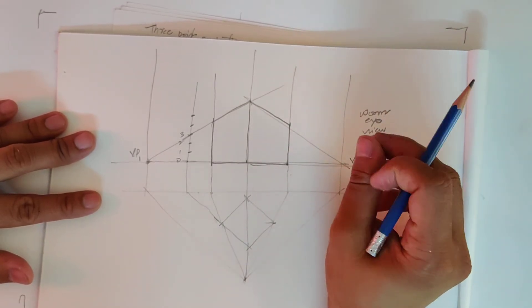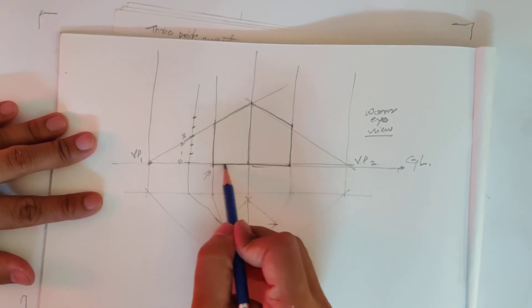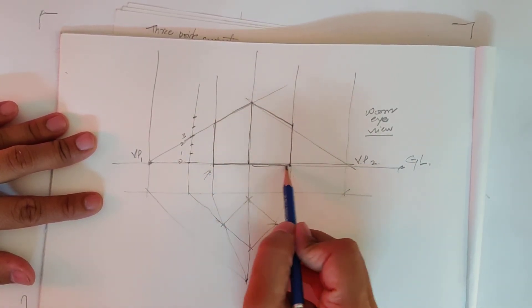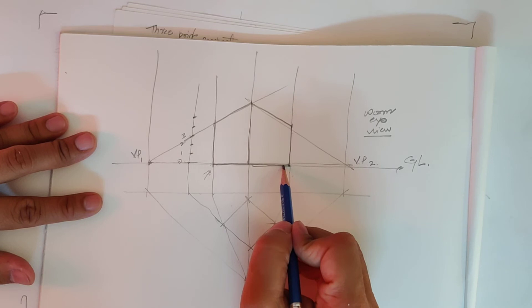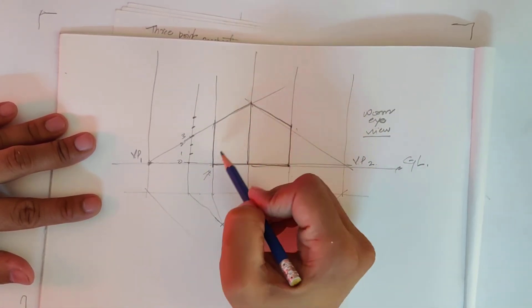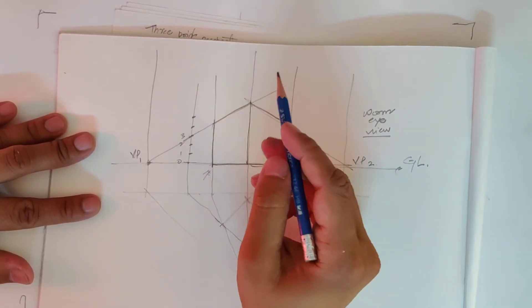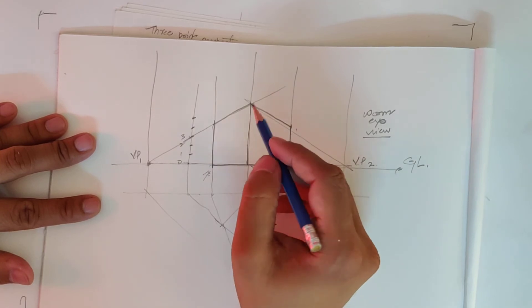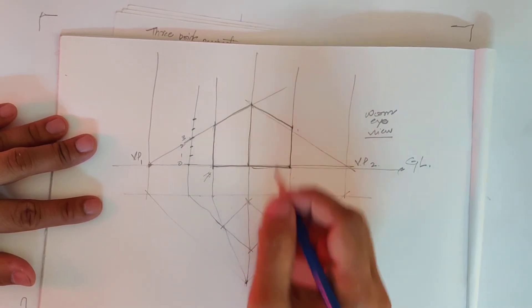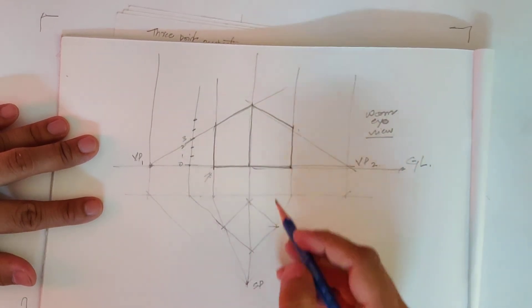Now, to make this three-point perspective, we know when we look at it from below, these edges will look broad as compared to the top because it would be vanishing upward. To make it vanish upward, what we have to do is take our third vanishing point above this building.